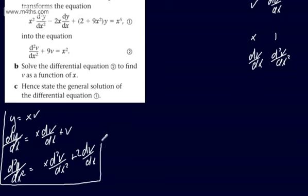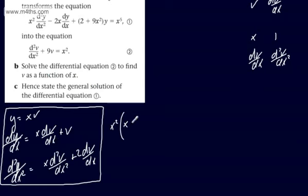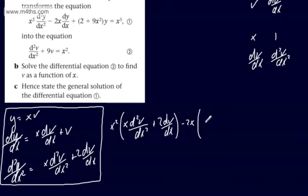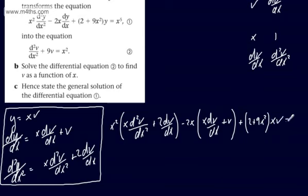I've now expressed y, dy/dx, and d²y/dx² in terms of x and v. Substituting into the original equation: x²(x d²v/dx² + 2 dv/dx) − 2x(x dv/dx + v) + (2 + 9x²)(xv) = x⁵. Expanding gives: x³ d²v/dx² + 2x² dv/dx − 2x² dv/dx − 2xv + 2xv + 9x³v = x⁵.